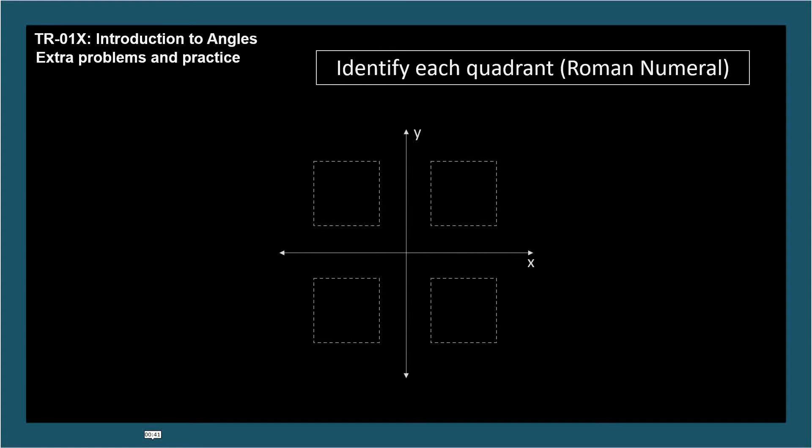Identify each quadrant with its Roman numeral. Quadrant 1 is the upper right quadrant having both x and y coordinates positive. Then the quadrants are simply numbered in sequence around the origin in the positive direction, which is counterclockwise.